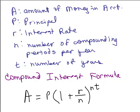If A is the amount of money in the account after the interest has been paid, P is the principal — how much you put in originally — R is the interest rate, and N is the number of compounding periods per year. So quarterly would be four times a year, so N would be four. Daily would be 365 times a year, et cetera. And T is the number of years it's in an account — one year, half a year, two and a half years, whatever.